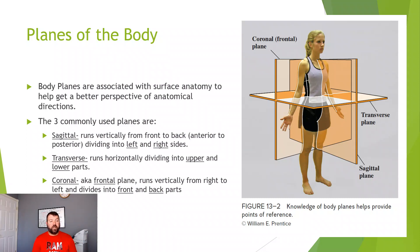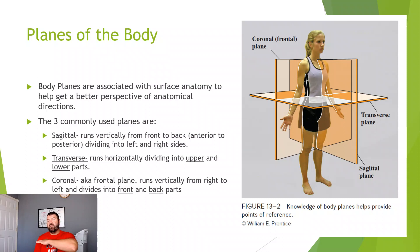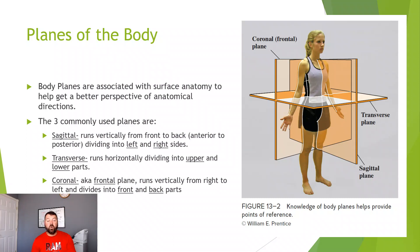Next is the transverse plane, which runs horizontally, dividing the body into upper and lower parts — so this is my upper side and this is my lower side. Last is the coronal, often called the frontal plane, which runs vertically from right to left and divides the body into front and back halves.